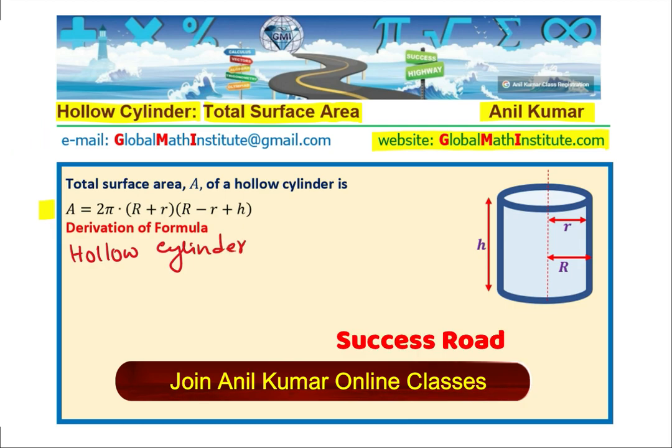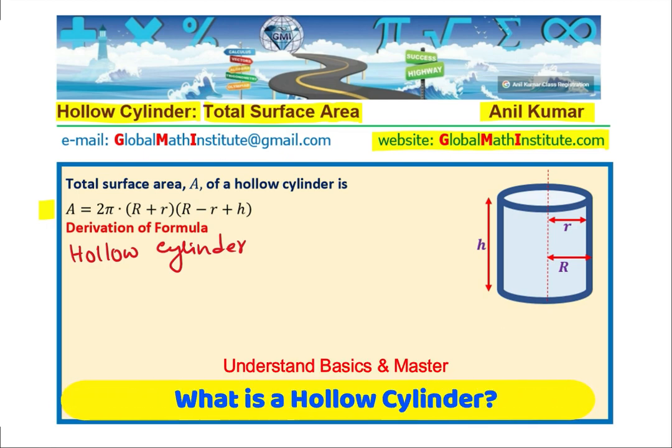As shown in the diagram, we have in this hollow cylinder two thin sheets of rectangle folded in circular form. We can say outer sheet, which is folded, whose radius is capital R, and the inner sheet whose radius is small r.